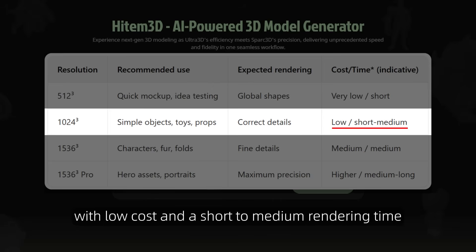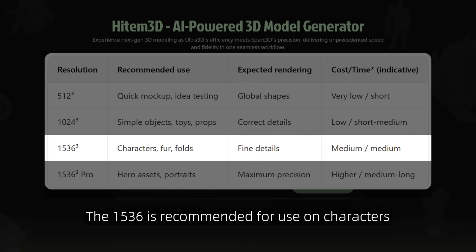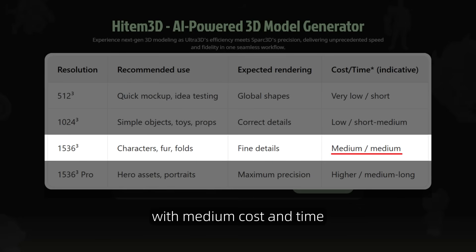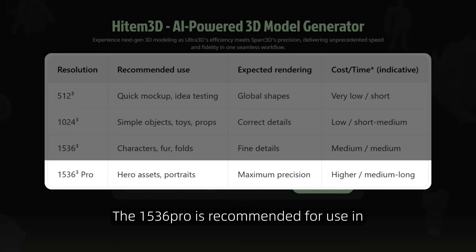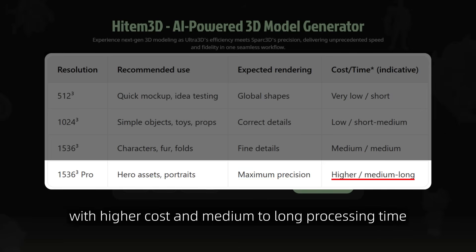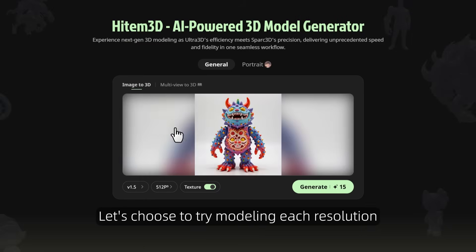The 1536 is recommended for use on characters, fur, and folds. The rendering effect is fine details, with medium cost and time. The 1536 Pro is recommended for use in hero assets and portraits. The rendering effect is maximum precision, with higher cost and medium to long processing time.